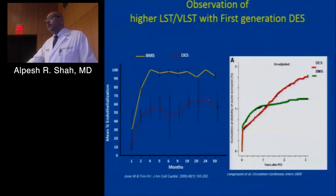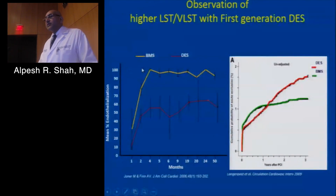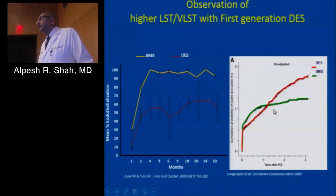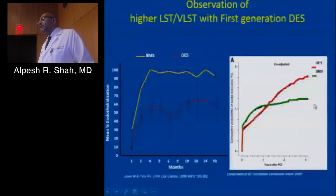What we learned was that it was a lack of endothelialization. A 2006 paper showed that bare metal stents had nearly 90% endothelialization after the first year, while drug-eluting stents had only about 50–60%. That's why event rates diverged — bare metal stents stabilized after year one, whereas with first-generation drug-eluting stents there was a continuing increase in event rates after the first year.